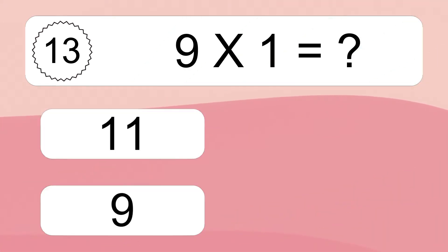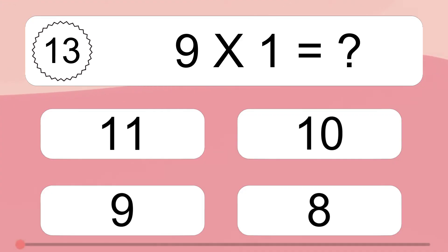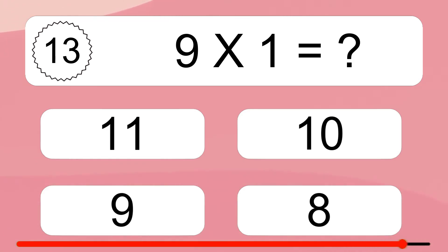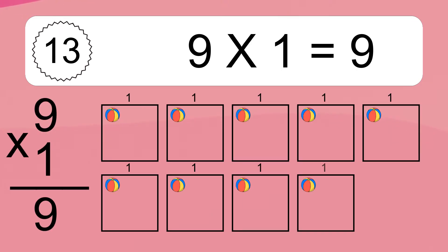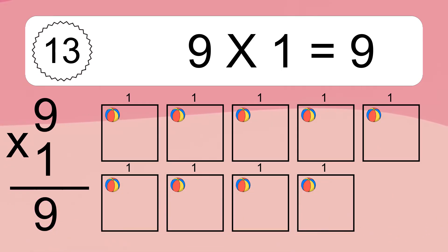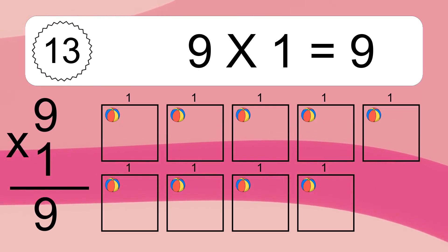Nine times one equals what? Nine times one equals nine. We have nine boxes and each box has one colorful ball inside. If you count all the balls in all the boxes together, you will have nine times one balls. This equals nine balls.